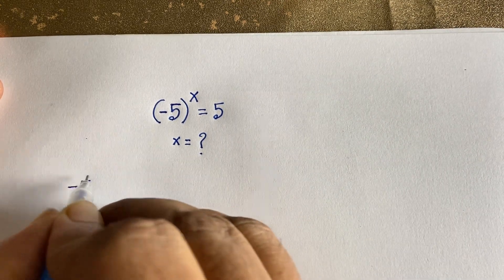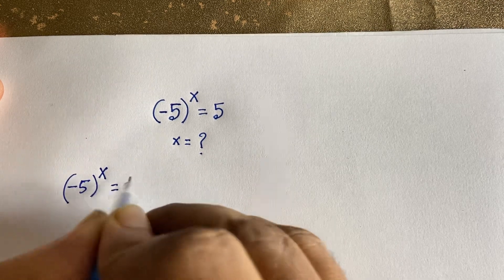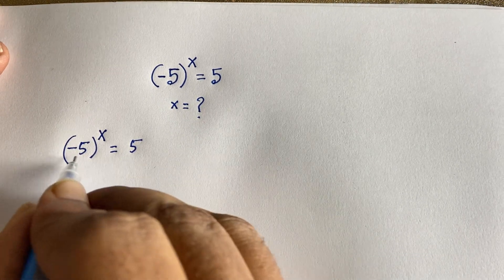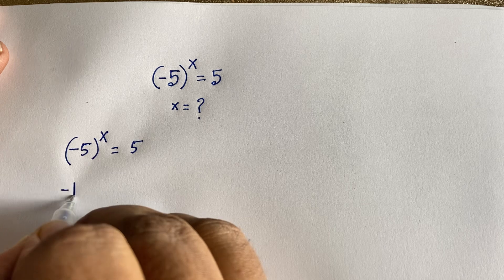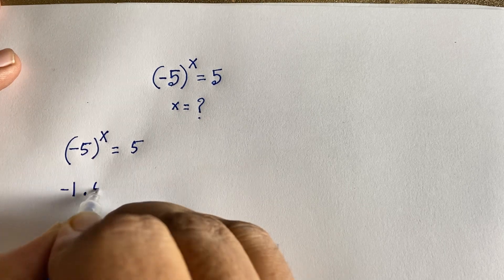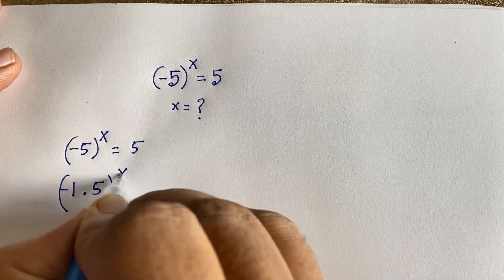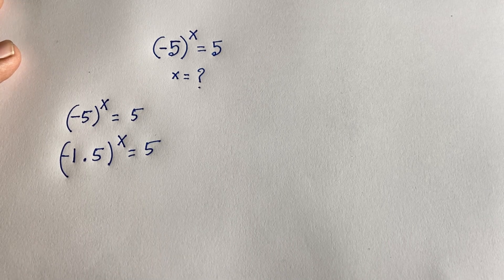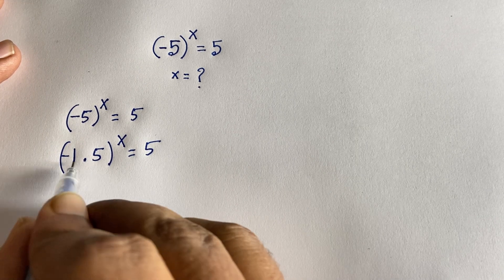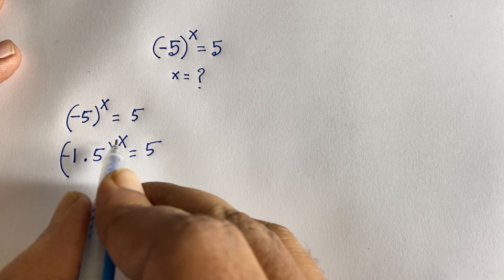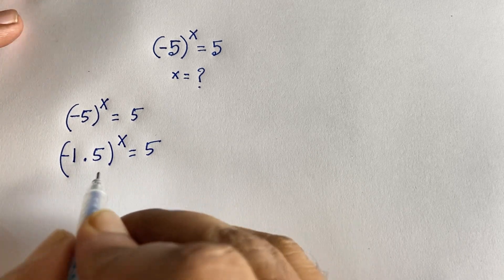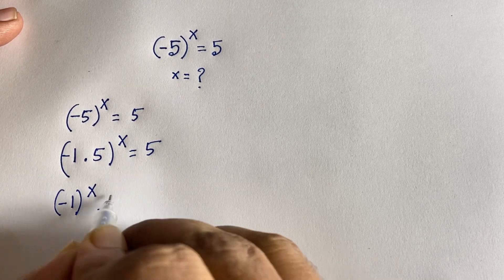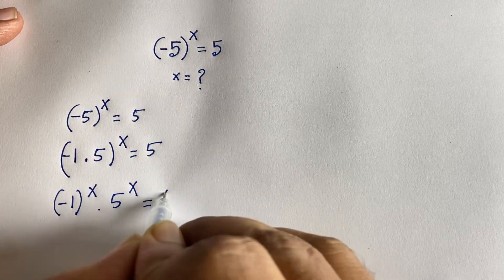Our question is (-5)^x = 5. I rewrite this expression as (-1 × 5) to the power x. According to exponential rules, (ab)^n = a^n × b^n, so this becomes (-1)^x × 5^x = 5.